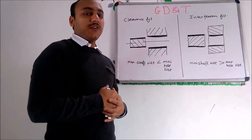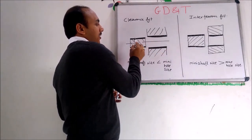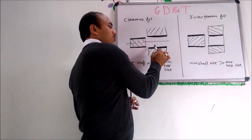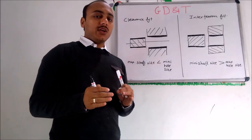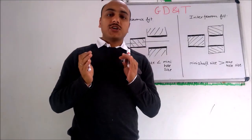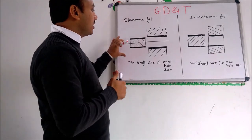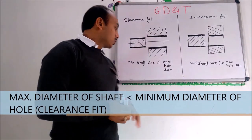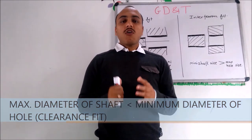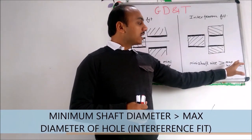Let's discuss various types of fits. In a clearance fit, the tolerancing zone on the shaft and the tolerancing zone on the hole are defined such that even in the worst case — where the shaft is at its biggest and the hole at its smallest — the shaft diameter is still smaller than the hole diameter. So the maximum shaft size must always be less than the minimum hole size. For an interference fit, the minimum shaft size must always be greater than the maximum hole size.